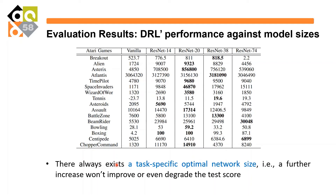In the evaluation results, we draw insights about deep RL performance against model size. It's not intuitive: larger model size does not necessarily lead to better performance. For example, in Breakout, ResNet-38 achieved the best performance, but for other games like Asteroids, smaller networks produced better performance than larger ones. We therefore conclude that there always exists a task-specific optimal network size, which motivates us to search for the specific network according to each individual task.